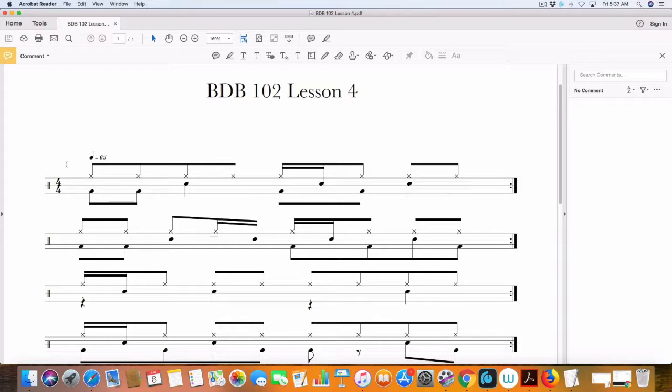Our first exercise here, exercise number one. We are using eighth notes on the hi-hat again. Recommended starting beats per minute is 65. So with eighth notes on the hi-hat we will have one and two and three and.